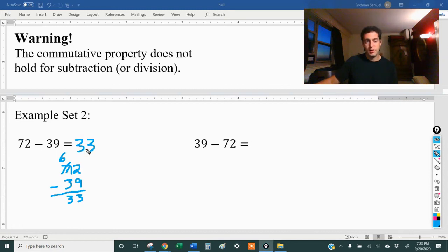Now what about over here? If I do 39 minus 72, this is almost the same as the other problem except the numbers are reversed. And in that case, I know that the answer is going to be the same as what I got over here, but opposite. So instead of positive 33, it's going to be negative 33.